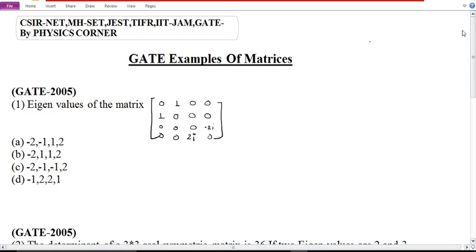Now see the example number first which was asked in GATE 2005. The question is eigenvalues of the matrix. The given matrix is a 4 by 4 matrix. Four options are given at the same time. This matrix trace equals to zero.